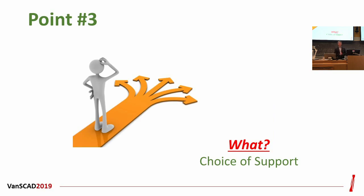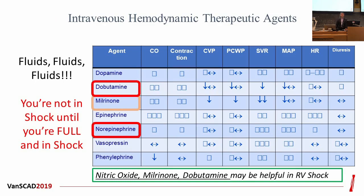Once you've identified the patient and decided to intervene, the first thing we do is give medications. Intravenous medications can be started within minutes. Fluids are most important — we no longer talk about shock if somebody is volume depleted. Fluids are given first; if they don't respond, intravenous medications are given. There are many different types. Norepinephrine and dobutamine are the most commonly used. None of them are perfect, but they aim to address the problem of a poorly pumping heart with elevated filling pressures.